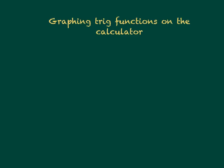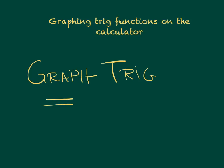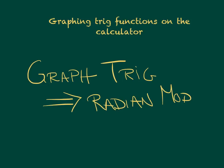First and foremost, when we graph trig, we have to check our mode. When we graph trig, we need to be in radian mode. When we did all that law of sines and law of cosines, we needed to be in degree mode, but we're going to have to switch sometimes. 99% of the time you should be in degree mode unless you're graphing — then you need to switch to radian mode. Go ahead and hit that mode button, next to your second key, and make sure we convert to radian mode.